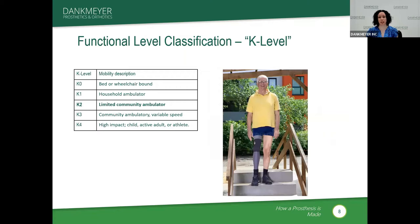The next level is the K-2, our limited community ambulator. These are people who do get out in the community and use their prosthesis to ambulate. They may be using a walker or cane, or they might not. They can do stairs, ramps, and curbs, but generally walk at a single, slow speed. They have the ability to get in and out of a car, run errands, and go to appointments, but have limitations — they are not going to be out all day in the community.